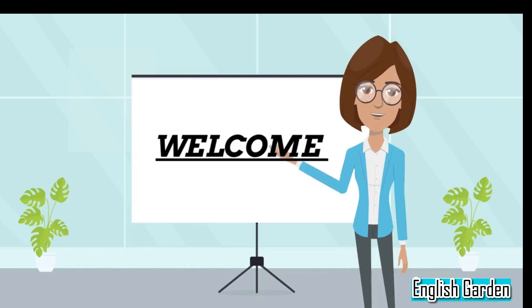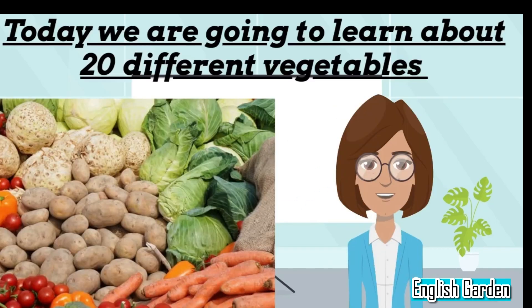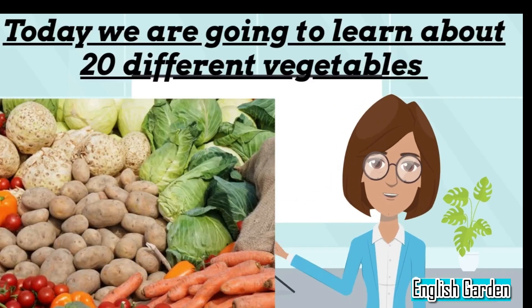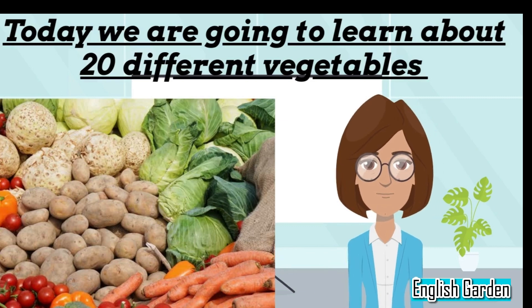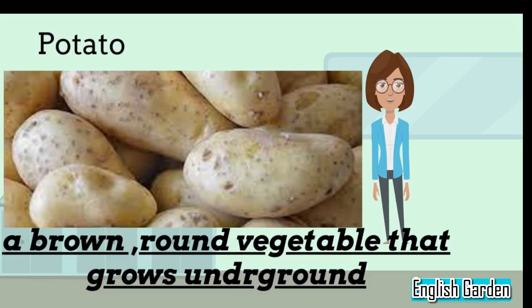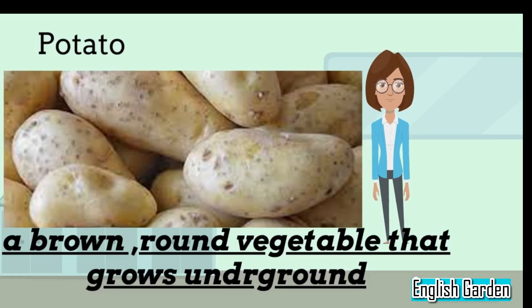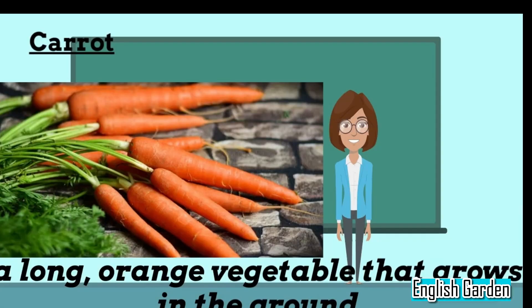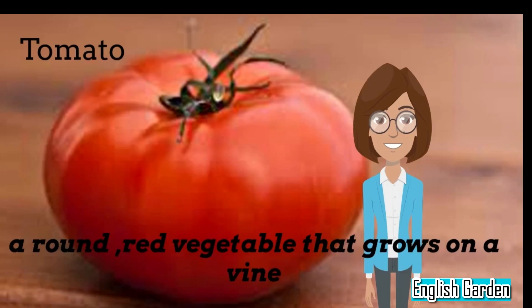Welcome to our English lesson for kids. Today, we're going to learn about 20 different vegetables. Potato, a brown, round vegetable that grows underground. Carrot, a long, orange vegetable that grows in the ground.